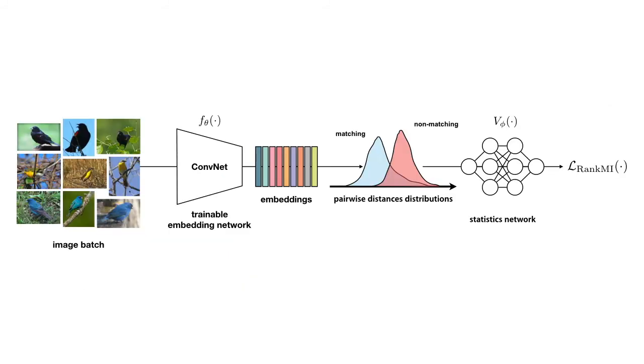Using recent developments in MI estimation, we simultaneously estimate and maximize MI with the help of an auxiliary neural network and thus define a new loss function.